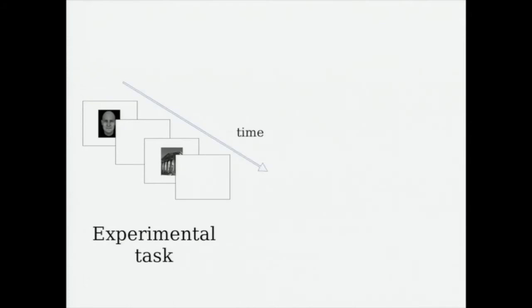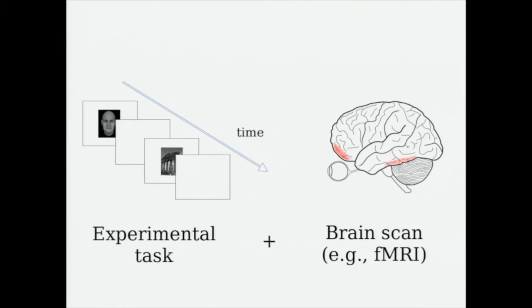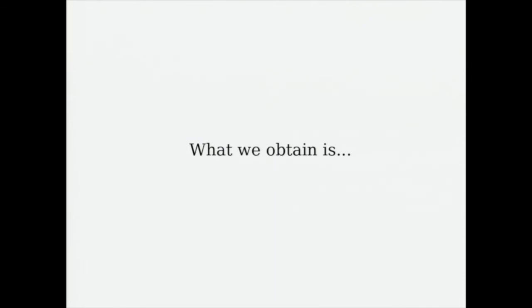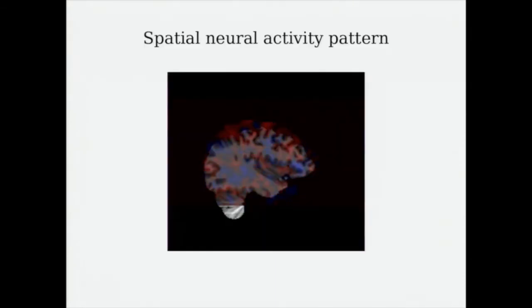At the same time, we can do a brain scan of the participant and record activity within the brain. What we can obtain is a spatial map of the brain's activity pattern which dynamically evolves over time as a participant is taking our task.